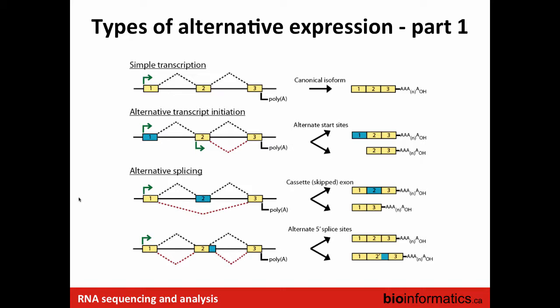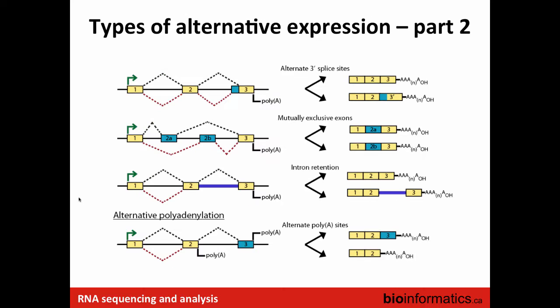Alternative five-prime splice site selection involves alternate donor sites where a different edge of an exon is used in one transcript compared to another. Similarly, at the three-prime splice site, different acceptor sites can be used, giving a different leading edge for an exon in different transcripts.